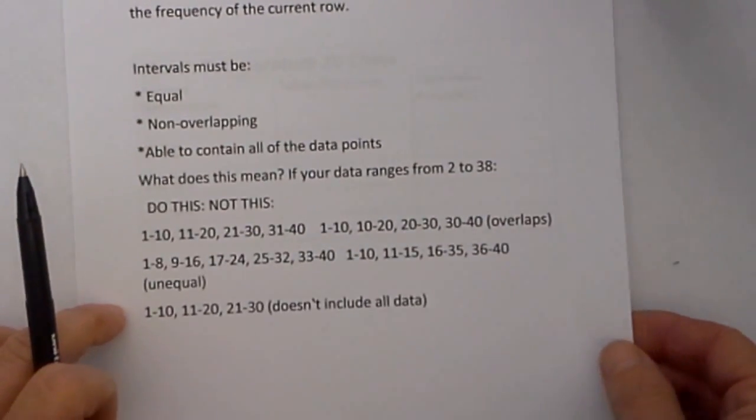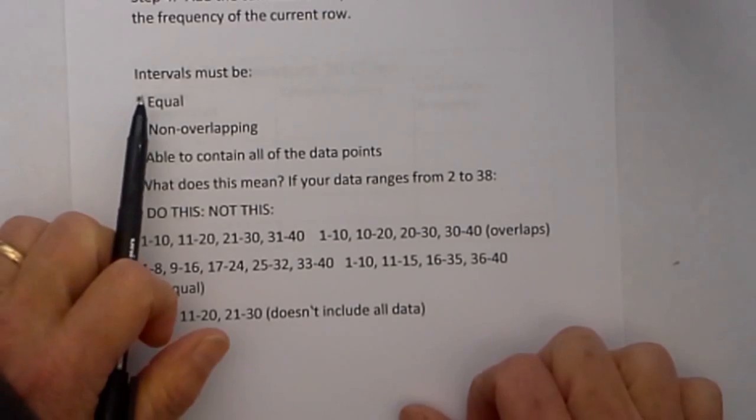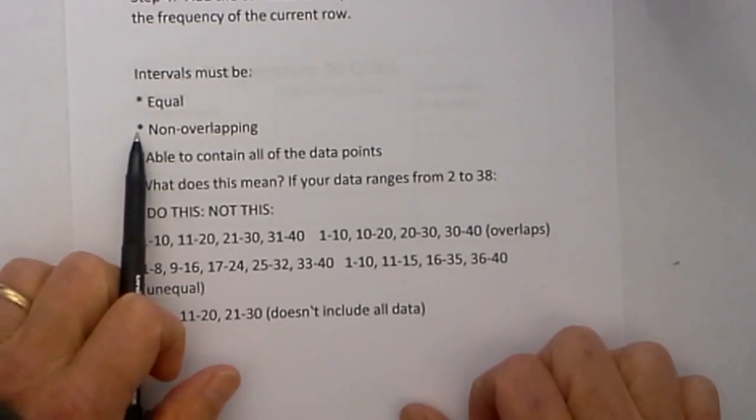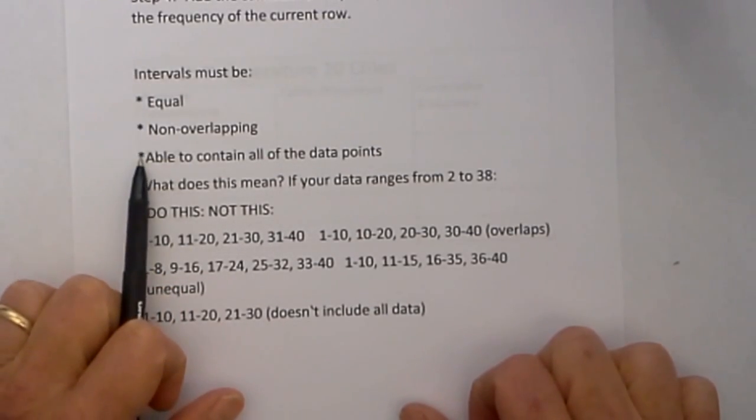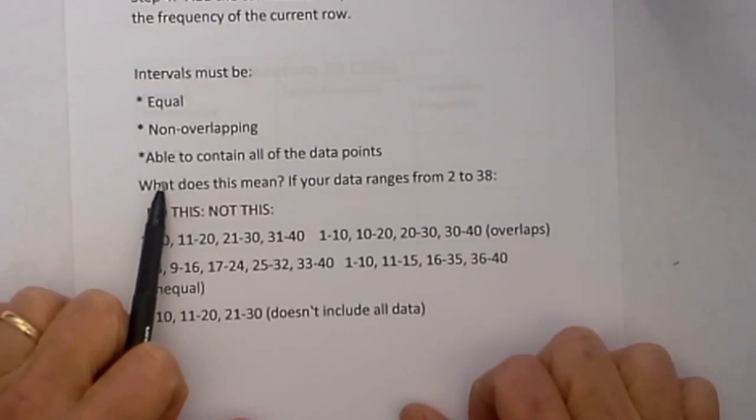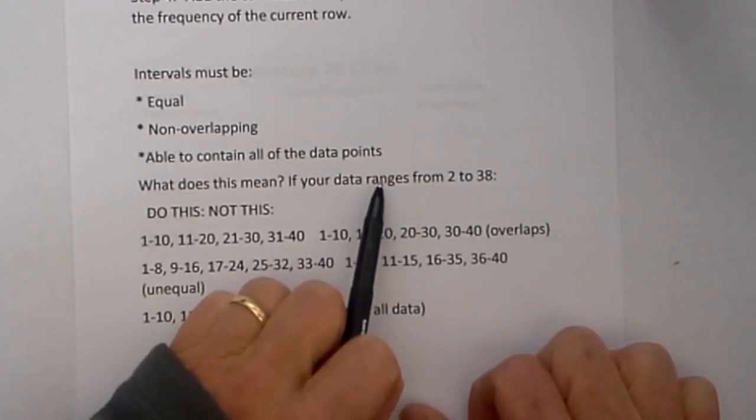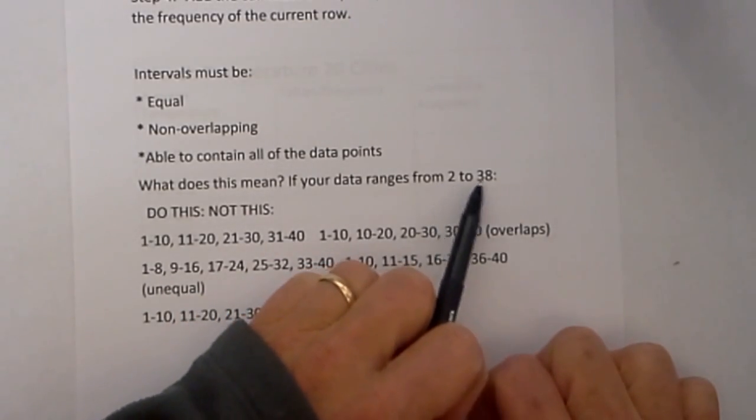A word or two about intervals. The intervals must be equal, non-overlapping, and able to contain all of the data points. What does this mean? If your data ranges between 2 and 38, let's do this and not this.